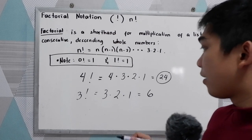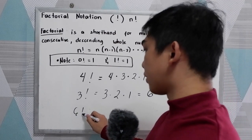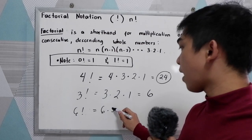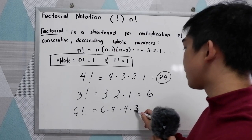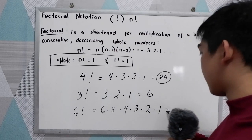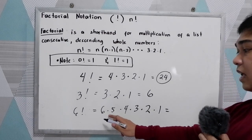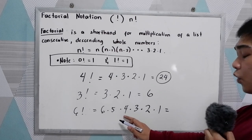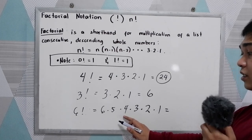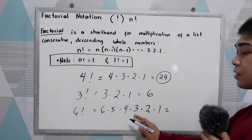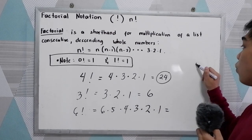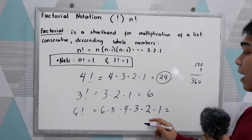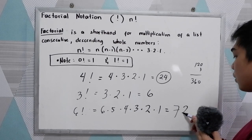If we have 6 factorial, it is 6 times 5 times 4 times 3 times 2 times 1. So 6 times 5 is 30, times 4 is 120, times 3 is 360, times 2, that is 720.